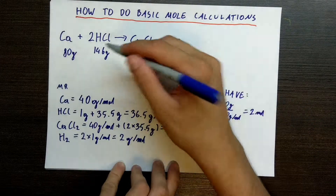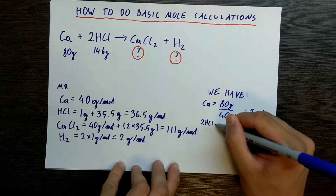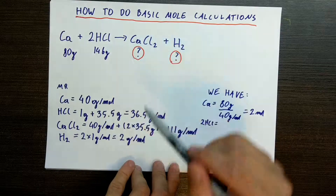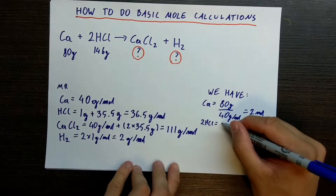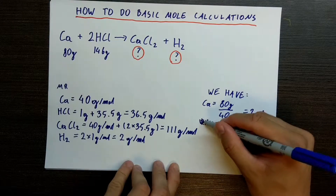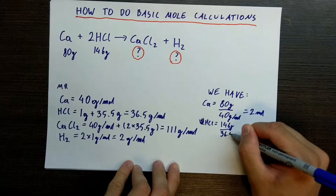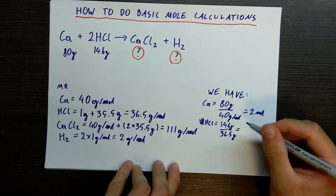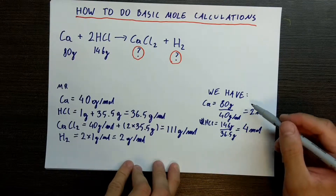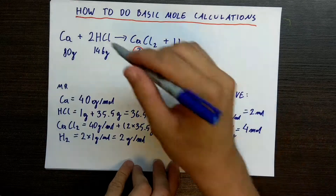Now what about hydrochloric acid? We have 2 HCl. We do 146 grams divided by 36.5 grams per mole, and that gives us 4 moles. So we have 4 moles of HCl. As you can see, the ratio is there — we have 2 moles of calcium and 4 moles of hydrochloric acid.